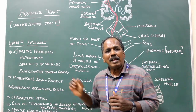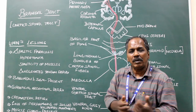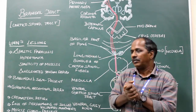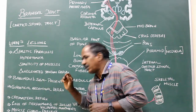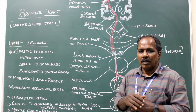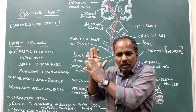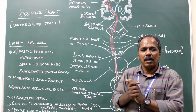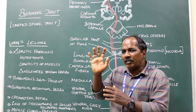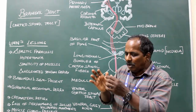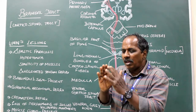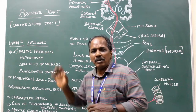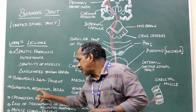Exaggerated tendon reflexes are present — the biceps tendon reflex and knee reflex are exaggerated. Babinski's sign is present: when the lateral part of the sole of the foot is scratched with a blunt instrument, the great toe is dorsiflexed and the lateral toes fan outward. In upper motor neuron lesions, Babinski's sign is positive.